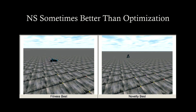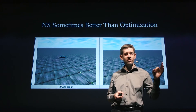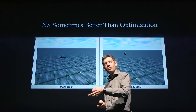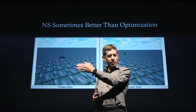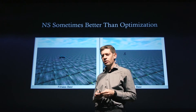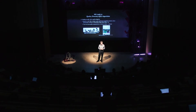This is because the stepping stones that lead to walking may not look like walking. For example, oscillation is a stepping stone that leads to walking, but if you discover oscillation, you don't necessarily move forward — you might fall on your face. Novelty search will like that because it's something new, whereas optimization will see it as not moving along the gradient of improvement. It can be very powerful to create a divergent process.